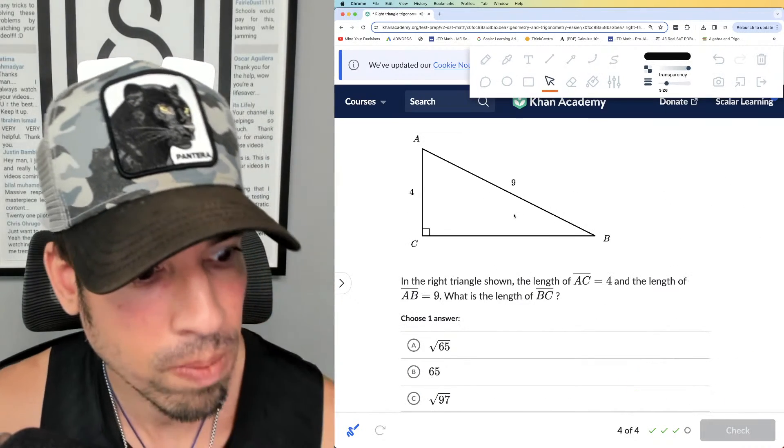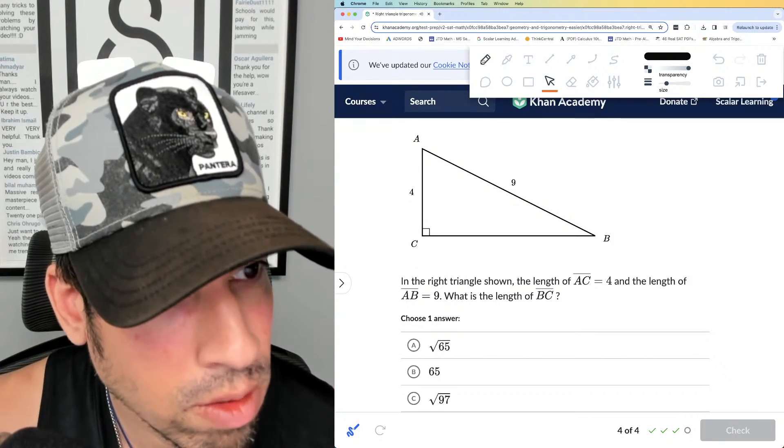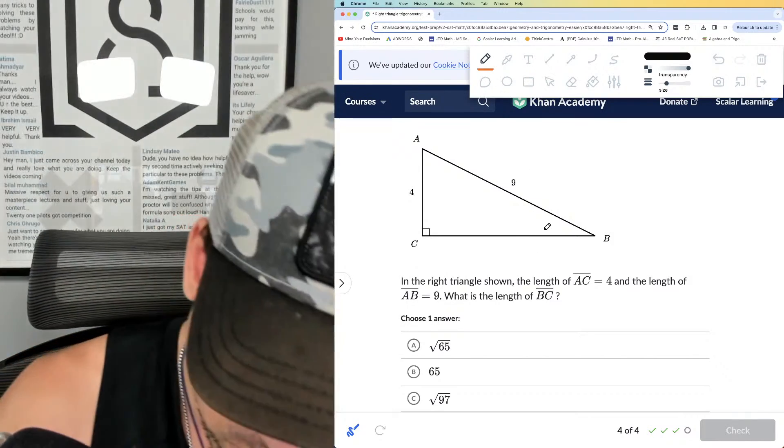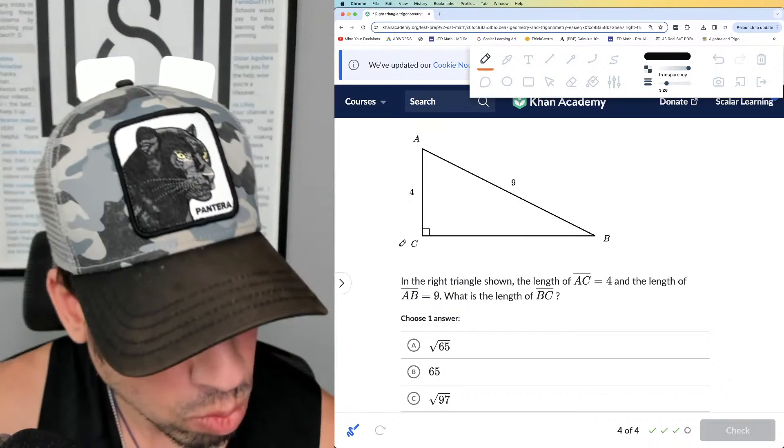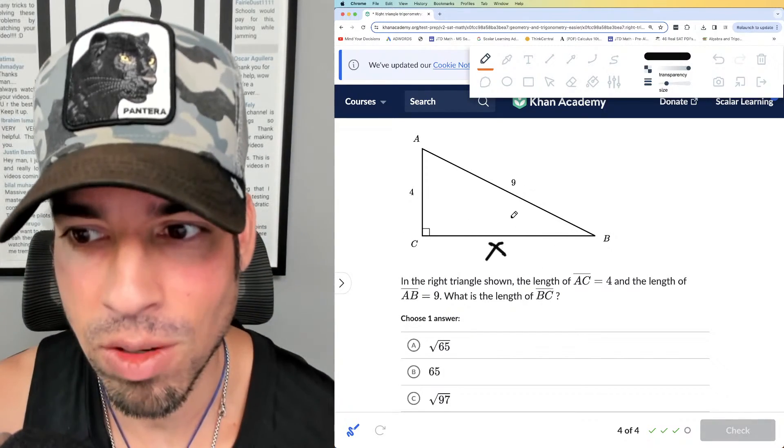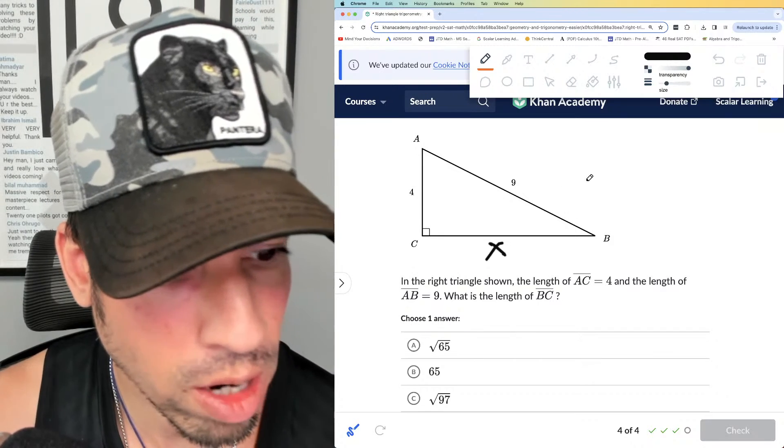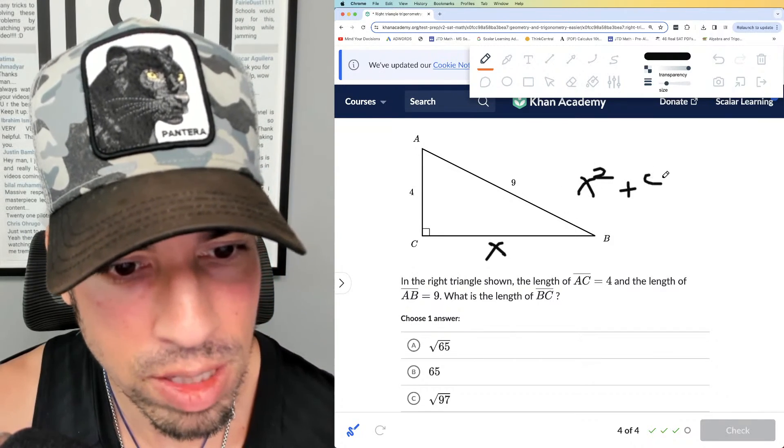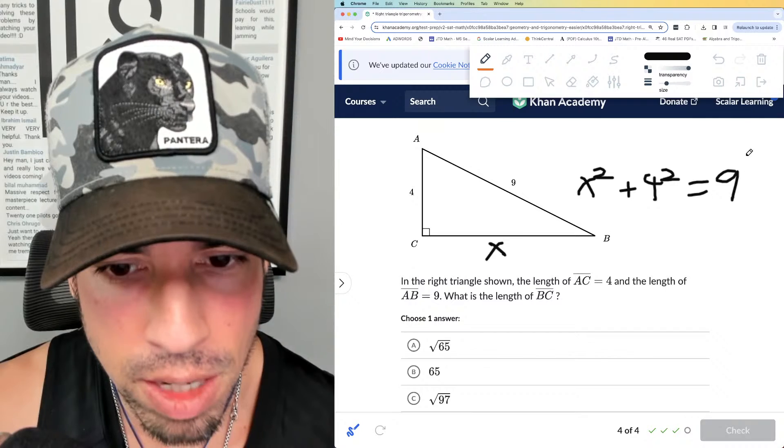All right, last one. Here we go. What is the length of BC? Again, this is a Pythagorean theorem situation, right. So we've got the length of BC, which is x, that's a leg. And we know from Pythagorean theorem for a right triangle, one leg squared plus the other leg squared is equal to the hypotenuse squared.